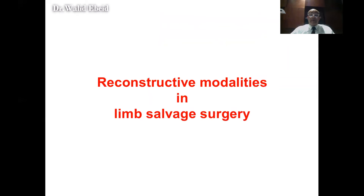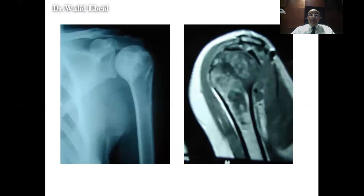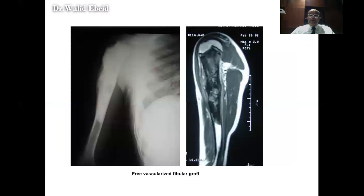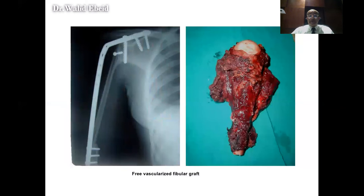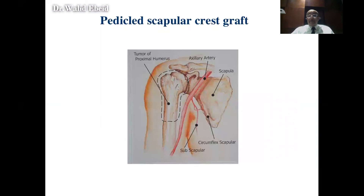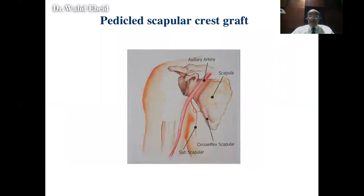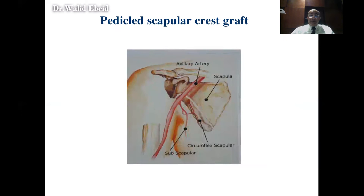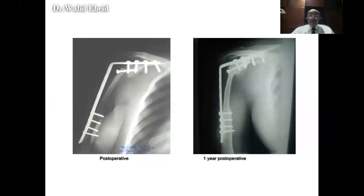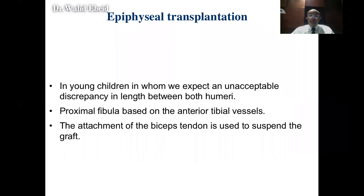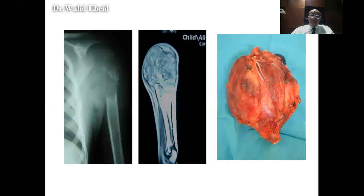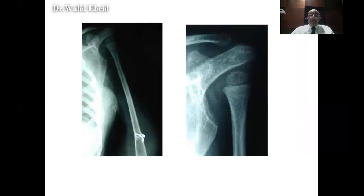We will review reconstructive modalities by body region. For the humerus: an osteosarcoma of the proximal humerus can be reconstructed with a modular prosthesis or a vascularized fibular graft — note how the fibula hypertrophies over time. Another technique is the pedicled scapular crest graft based on the circumflex scapular vessel for proximal humeral reconstruction with shoulder fusion. In children, epiphyseal transplantation using the proximal fibula based on the anterotibial vessels maintains humeral length.